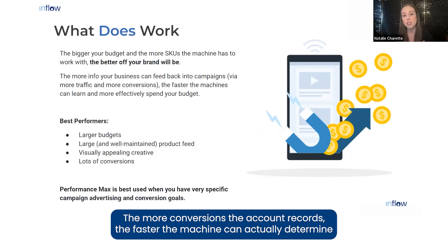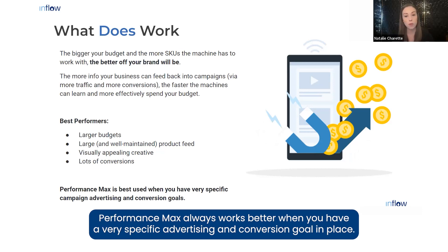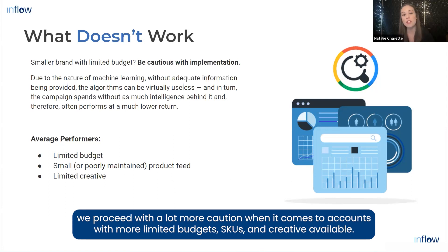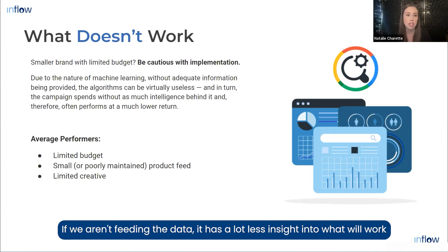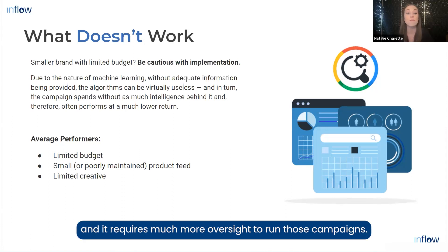The more conversions the account records, the faster the machine can determine the factors those conversions have in common and target more aggressively. Performance Max always works better when you have a very specific advertising and conversion goal in place. On the flip side, while campaigns can still be successful, we proceed with much more caution for accounts with more limited budgets, SKUs, and creative available — purely due to the nature of machine learning, which has less insight when it has less data.